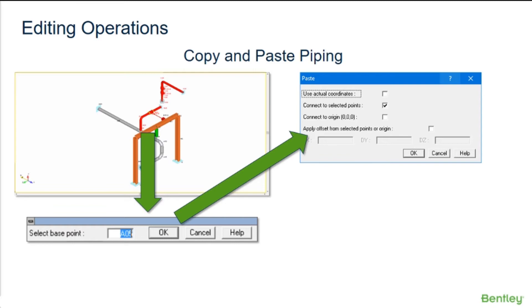So it's important to make sure that you're aware of your active point or selected range. You can select the option use actual coordinates to paste using real world coordinates — for example, a structural model that's going into a piping model.